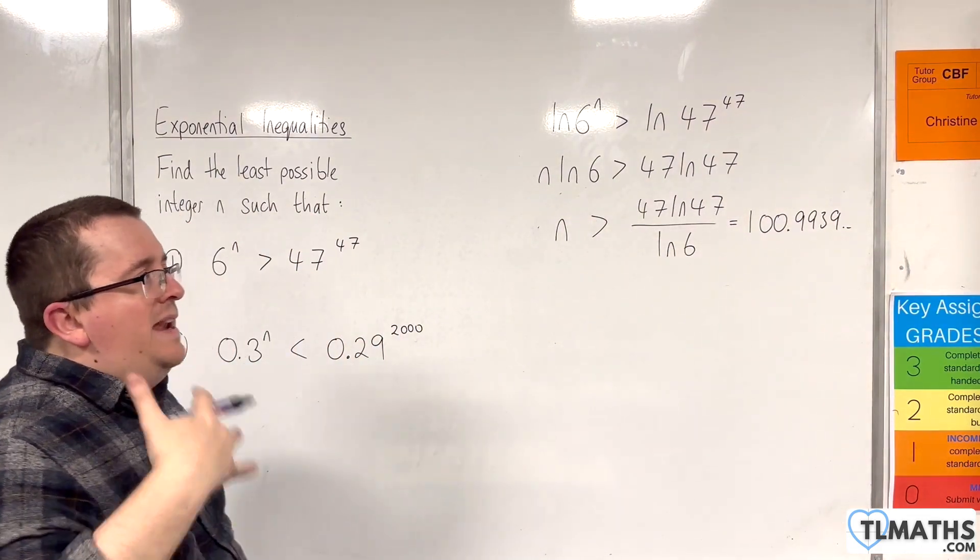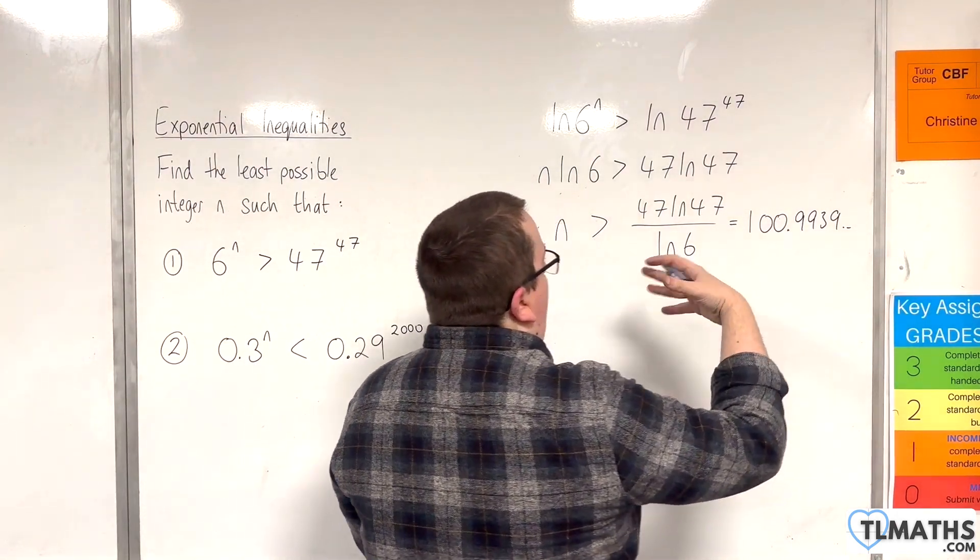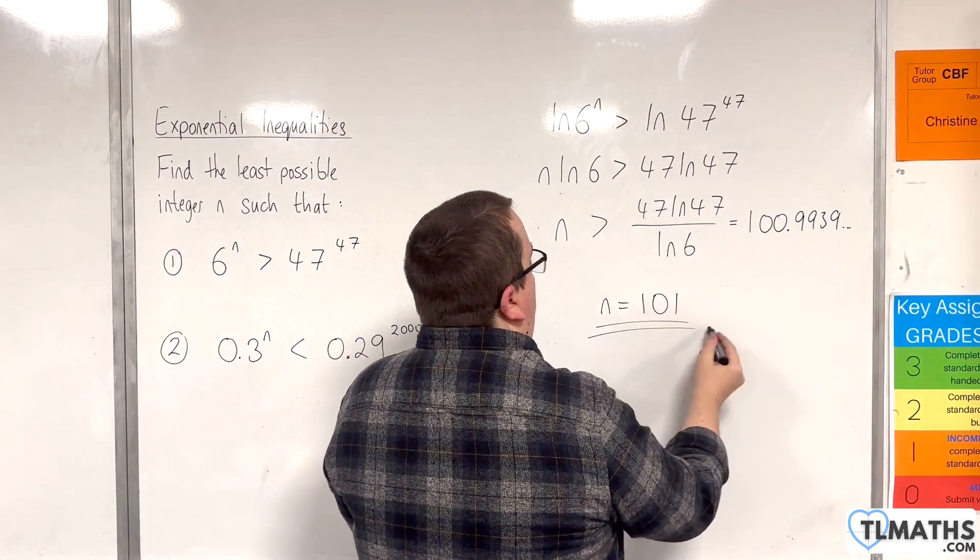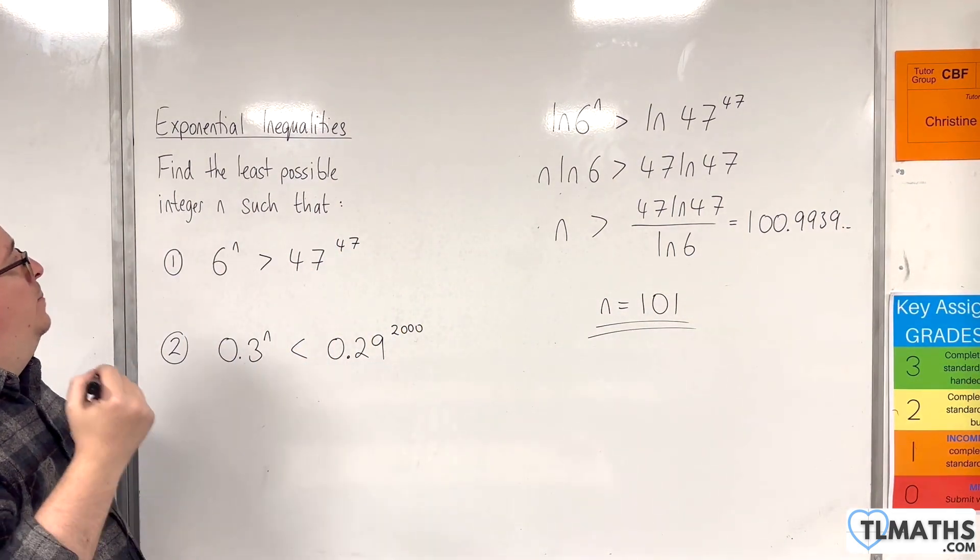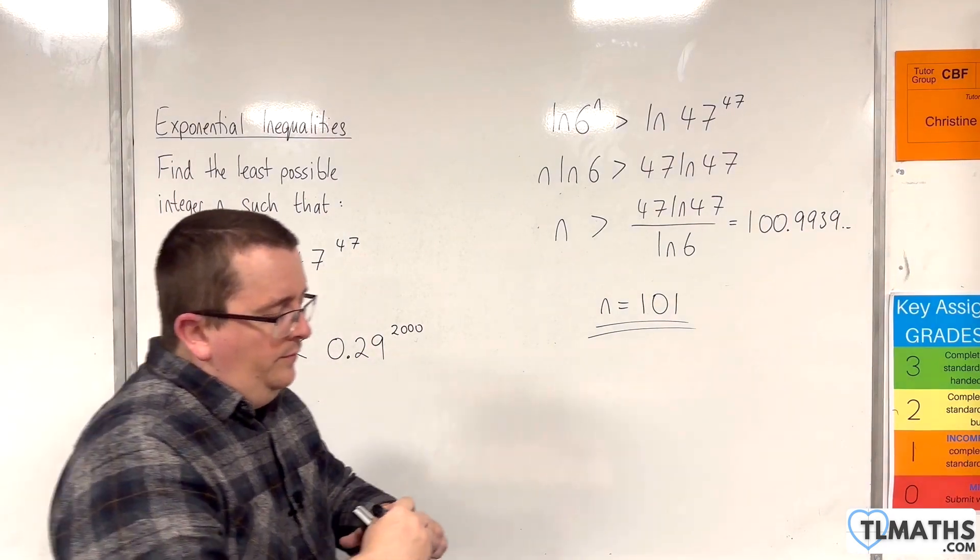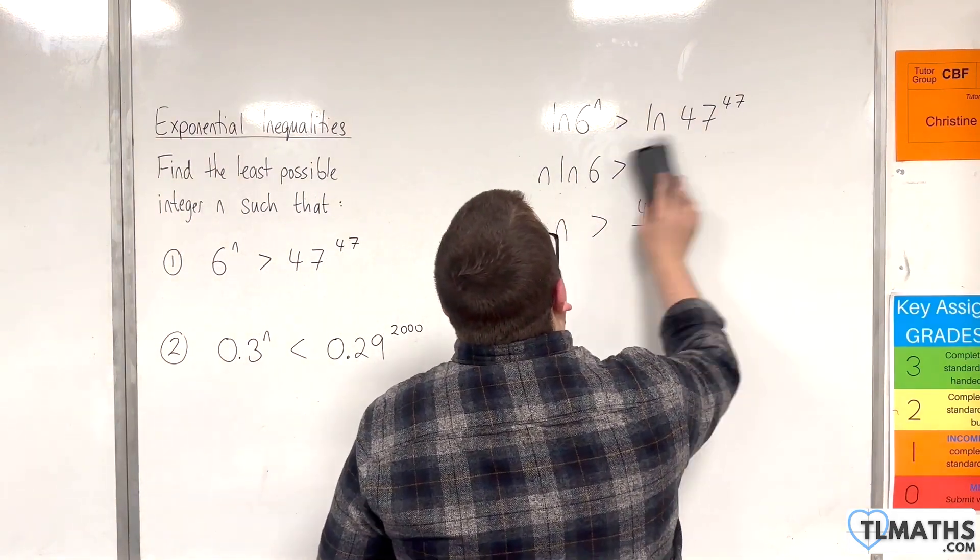So the next integer, so n needs to be greater than that number, so n would have to be equal to 101. And that is the least possible integer that solves that inequality. So for the second example,